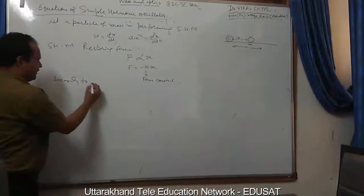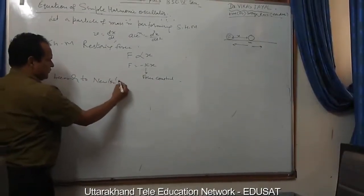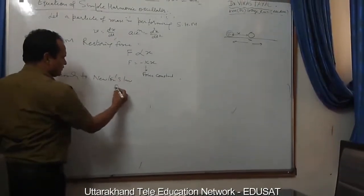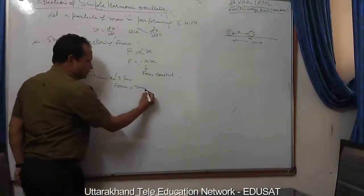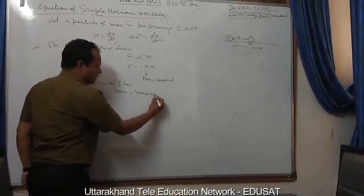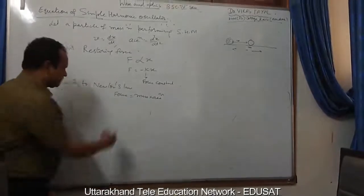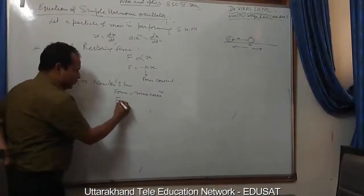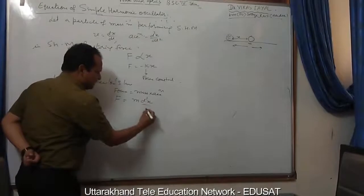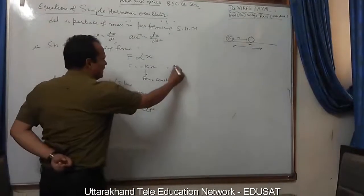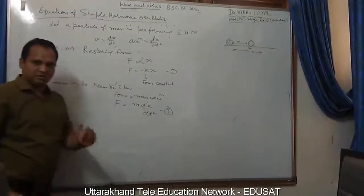According to Newton's second law, force is equal to mass multiplied by acceleration: F = M × (d²x/dt²). This is called equation 1, and the restoring force expression is called equation 2.